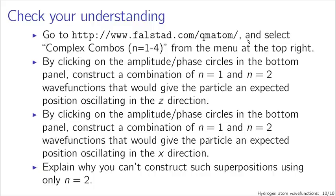To check your understanding of what the hydrogen atom orbitals look like, there are simulations at Falstad.com with a hydrogen atom orbital visualization tool where you can make complex combinations. I encourage you to play with this simulation and get a feel for what the orbitals look like — both from the chemist's perspective (real hydrogen atom orbitals) and the physicist's complex approach. The specific sub-tool I'm suggesting is complex combinations of orbitals with n equals 1 through 4.